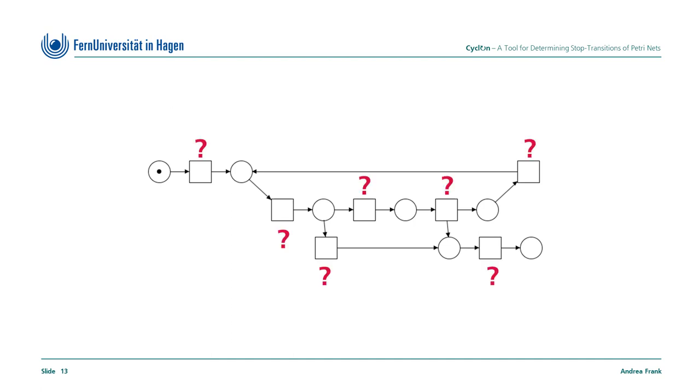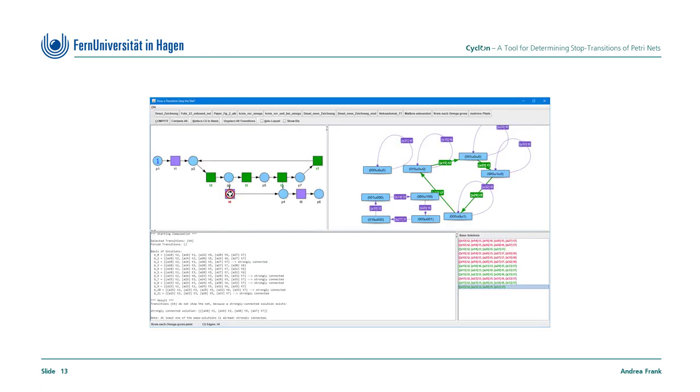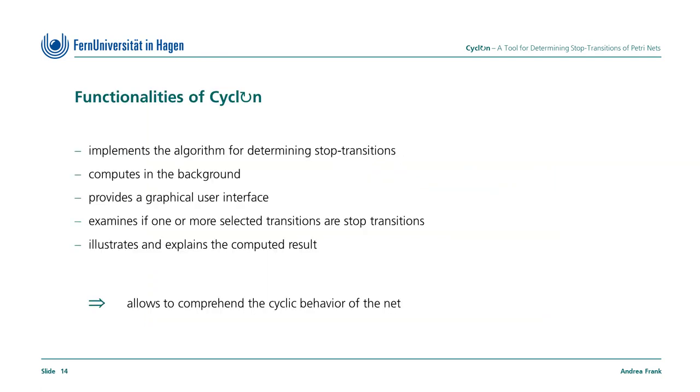Stop transitions cannot be determined by actual Petri Net tools. For this purpose, the tool Cyclone was developed at our chair. In addition to the algorithmic functionality to determine stop transitions of Petri Nets, Cyclone can also illustrate and explain the computed results. Let me briefly list the functionalities of the tool Cyclone. The main functionality is the algorithm for determining stop transitions in Petri Nets. Cyclone also provides a graphical user interface to represent the actual Petri Net, a corresponding coverability graph, and the computed results. Instead of single transitions, also multiple transitions can be examined. The computed results are clearly displayed and explained in a comprehensible manner. I would simply say, with this tool, the cyclic behavior of a Petri Net can be examined.